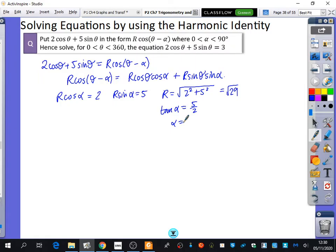So α is the inverse tan of 5 over 2. Are we in degrees or radians mode? Degrees mode. Good. So put your calculator back in degrees mode, and we will do the inverse tan of 5 over 2. Now, α is 68.1985 degrees.